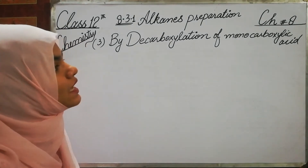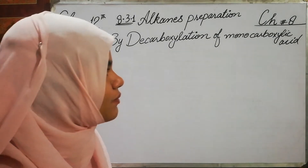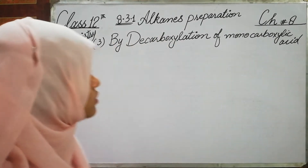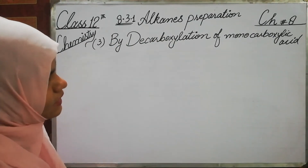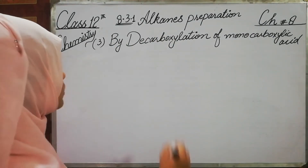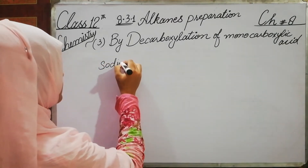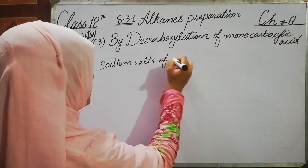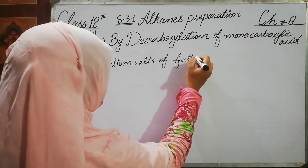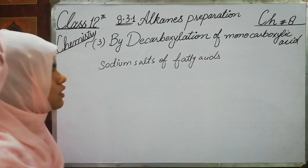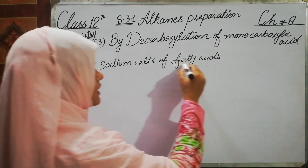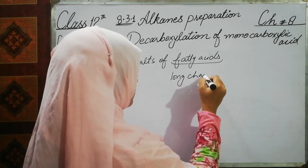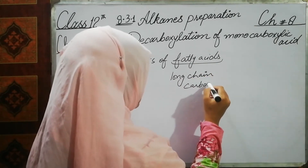The method is decarboxylation of monocarboxylic acid. In the first lectures we prepared alkanes from alkyl halides. Today we prepare alkanes by decarboxylation of monocarboxylic acid. We have sodium salts of fatty acids — carboxylic acids with a long chain.